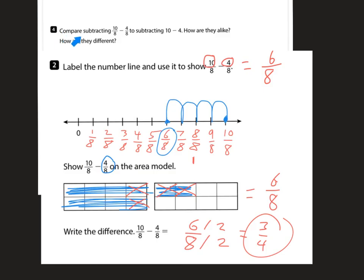And finally, compare subtracting 10 eighths minus 4 eighths to subtracting 10 minus 4. How are they alike and how are they different? All right. First off, how are they alike? They are alike because 10 eighths minus 4 eighths, you're essentially subtracting just your numerators, which is 10 minus 4 to get 6. And then your denominators stay the same. So that's how they're alike. How are they different? You can see 10 minus 4 deals with whole numbers. And then we have fractions, 10 eighths minus 4 eighths. That's dealing with parts of a whole.